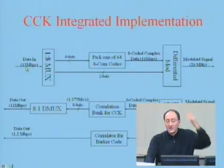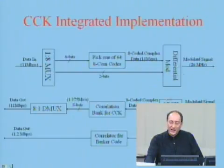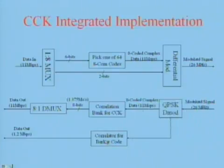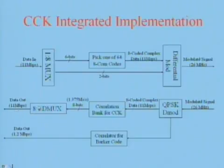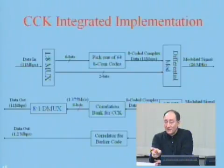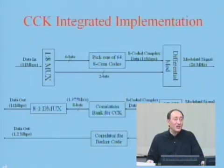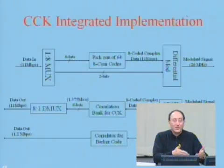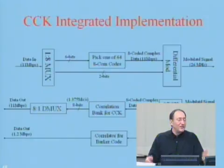For 2 megabit per second data, it comes in directly, gets encoded, and at the receiver passes through the Barker code and is decoded at 1 or 2 Mbps. For CCK, it goes through the CCK path. How do you know which path to use? PLCP will tell you — the PLCP header contains the data rate. If the data rate in the packet header is 11 Mbps, you decode using M-ary orthogonal coding. If it is 1 Mbps, you do binary PSK; if 2 Mbps, you do QPSK.